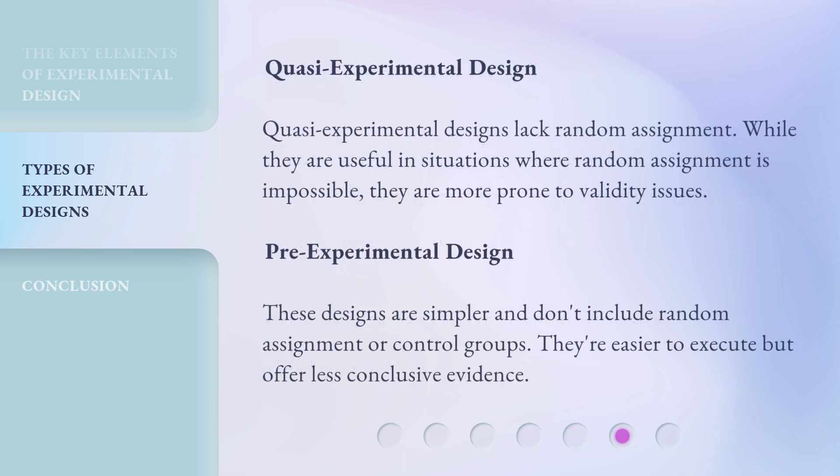Quasi-experimental design. Quasi-experimental designs lack random assignment. While they are useful in situations where random assignment is impossible, they are more prone to validity issues. Pre-experimental design. These designs are simpler and don't include random assignment or control groups. They're easier to execute but offer less conclusive evidence.